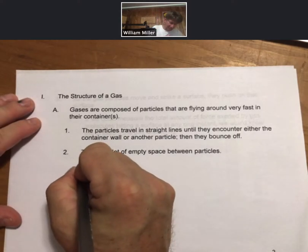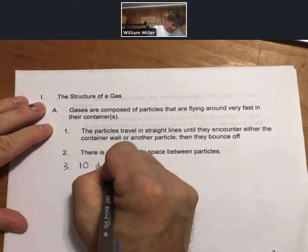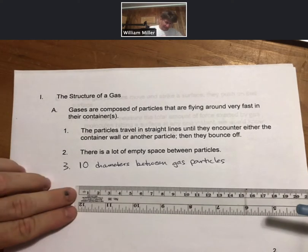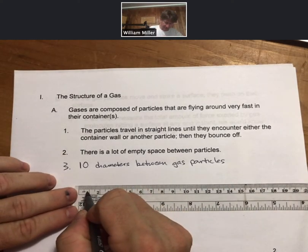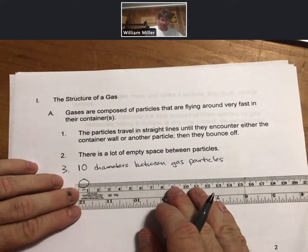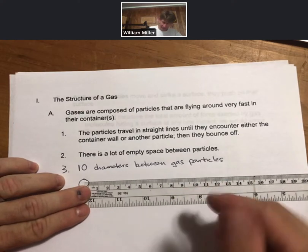First note I want to say, let's actually make it note number three. So remember our picture of a gas has ten diameters between gas particles. So that's our picture of a gas and I just so happen to have a ruler here and that means that if I make a gas particle that has a diameter of one centimeter, then the next one has to be way over here.